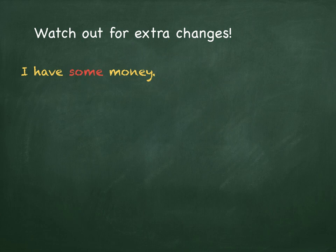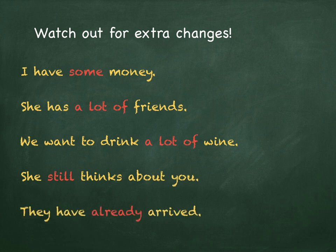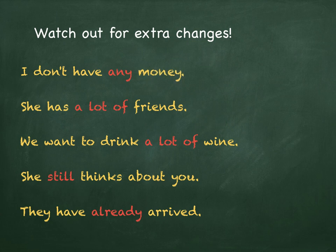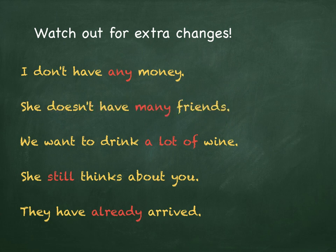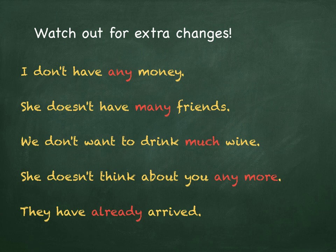There are some more changes in some cases in negative sentences. These are the normal sentences, but they change. The first one — I have some money — changes to I don't have any money. In the next two, you can see the expression 'a lot of', which is normal in regular sentences, but in these cases they will change. She doesn't have many friends. We don't want to drink much wine. She still thinks about you changes to she doesn't think about you anymore — that is perhaps the most natural way to make that change.